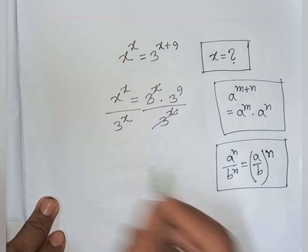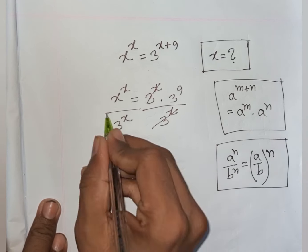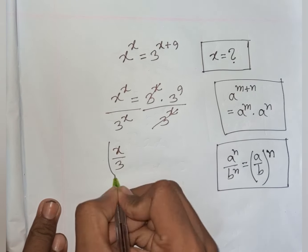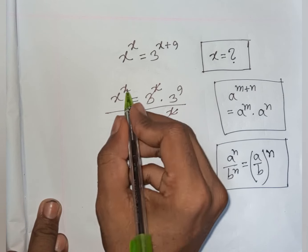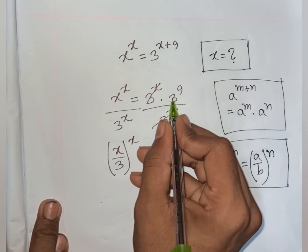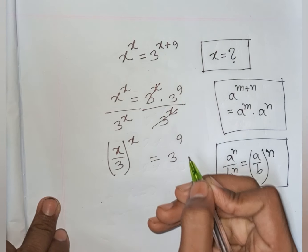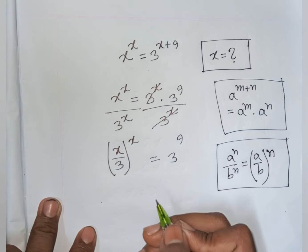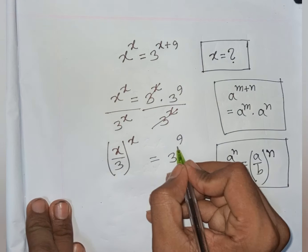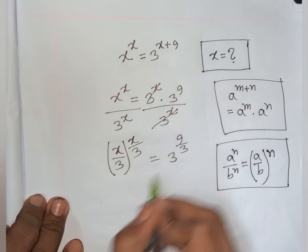According to this rule, (x/3)^x is equal to 3^9. Now we divide both sides by this power of 3.